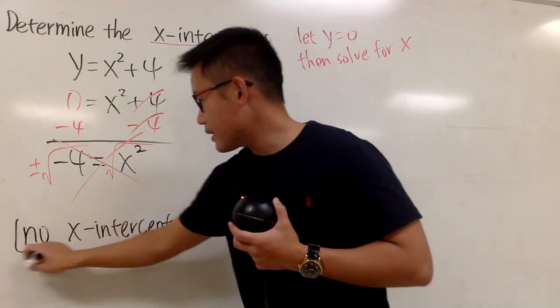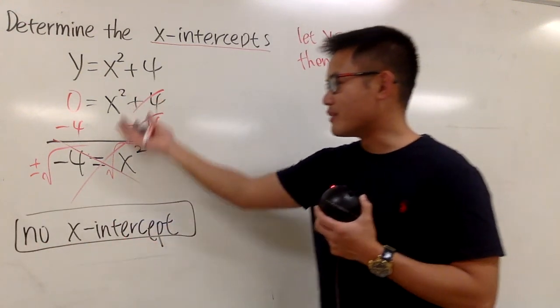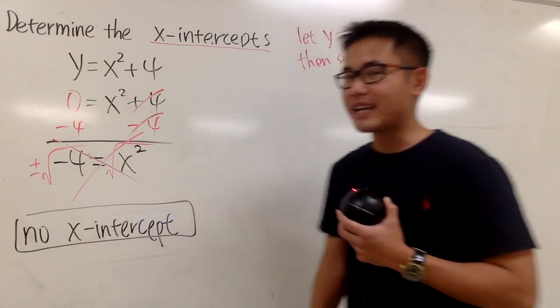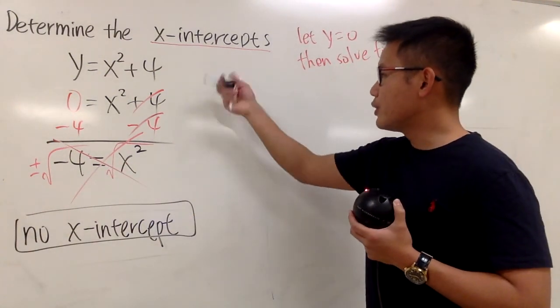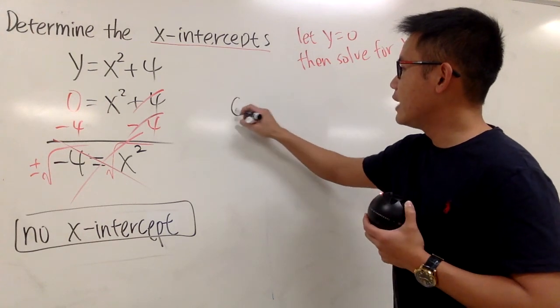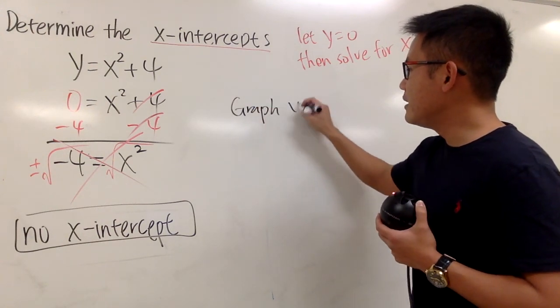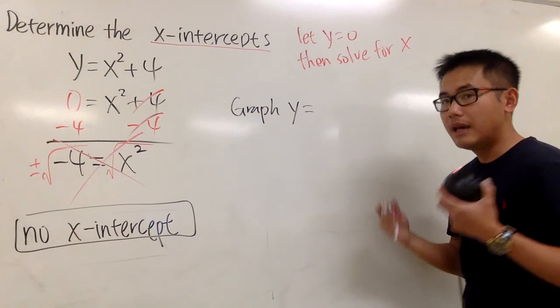This will be the answer, because we tried to solve it and there was no real value. Just to show you real quick, if you want to make a graph, you'll see why it doesn't have any x-intercepts.